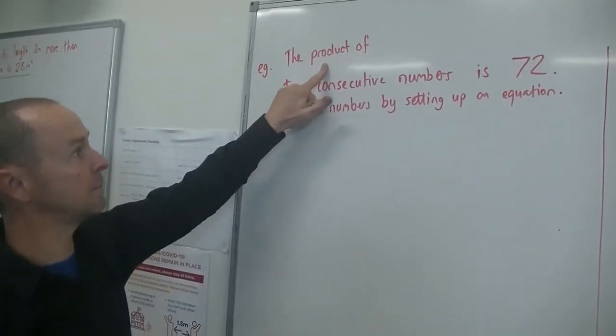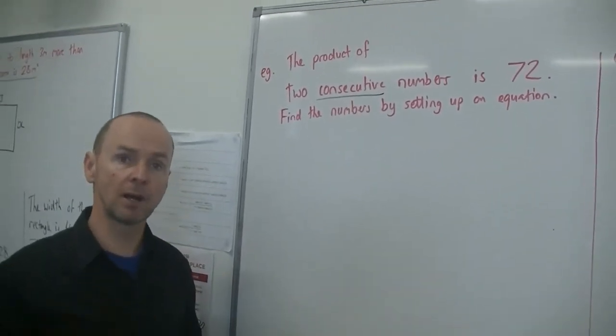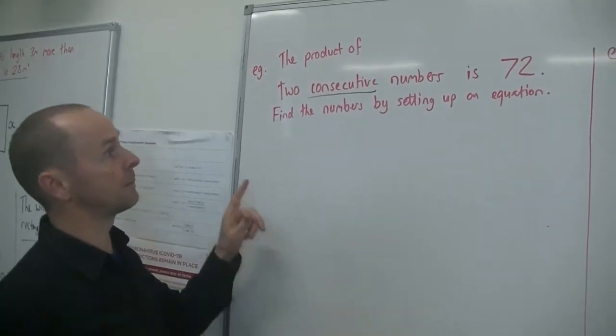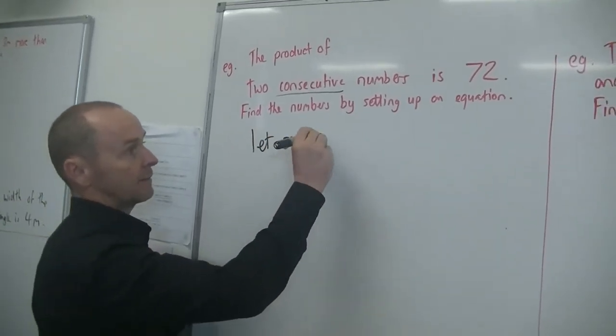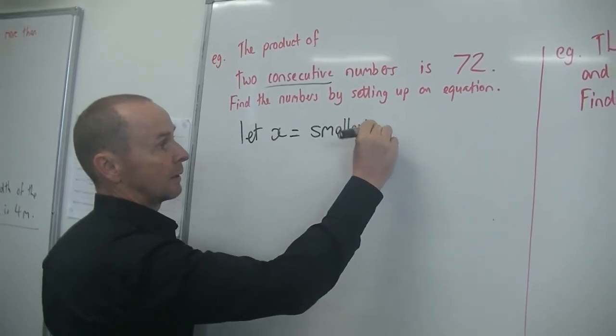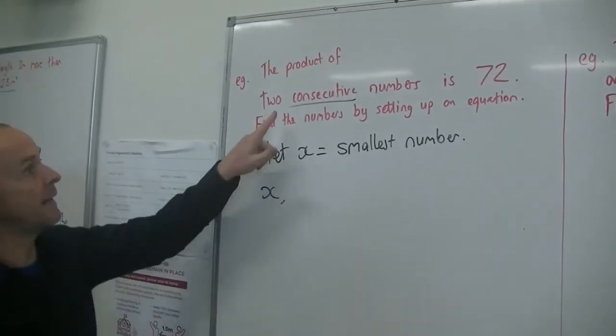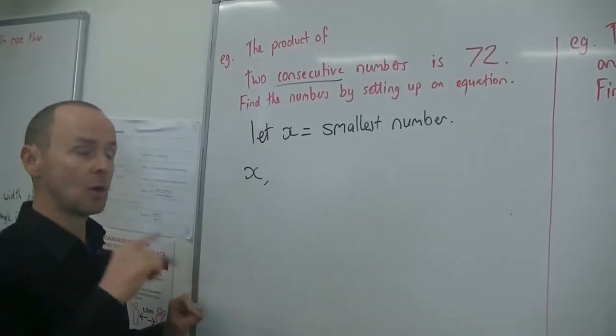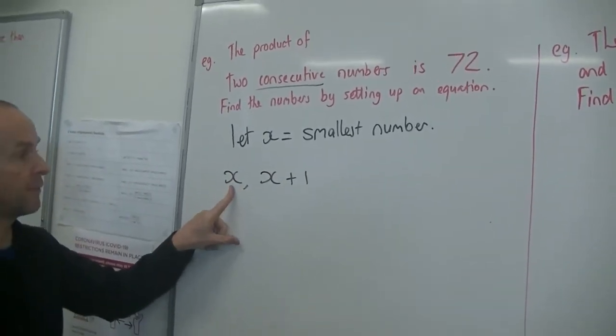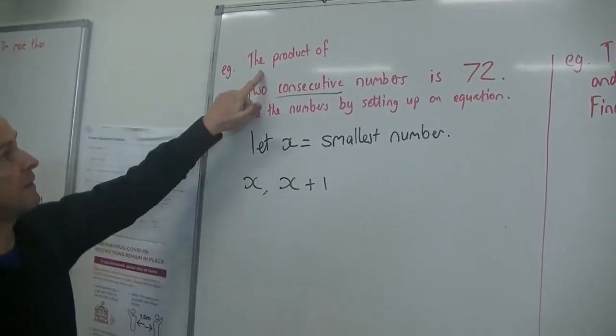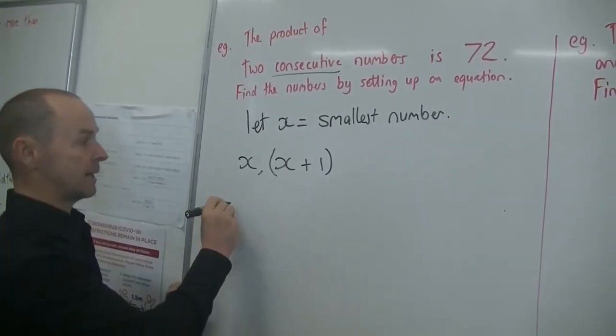So product means times. Two consecutive numbers. Consecutive, that word means one after the other. For example, 4 and 5, they're consecutive numbers. They're one after the other. Okay. Find the numbers by setting up an equation. So to find the variables, let x equal smallest number. All right. So if x is my first number, or the smallest number, the next consecutive number, the one after that, would be x plus 1, because it's one more than x. So there's our first number, and there's our second number. And it says here the product of the two numbers. When we multiply these two numbers together, and put brackets around that, it equals 72. So now we can set up an equation. x times x plus 1 is equal to 72.